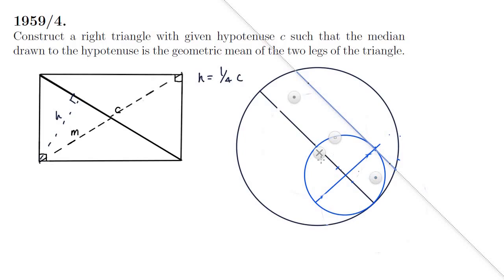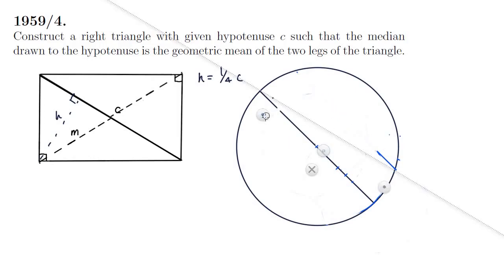It'll be perpendicular to the radius and the radius of that blue circle is h so now all the points along that blue line that we've just drawn is a distance of h from the diameter of the big circle.